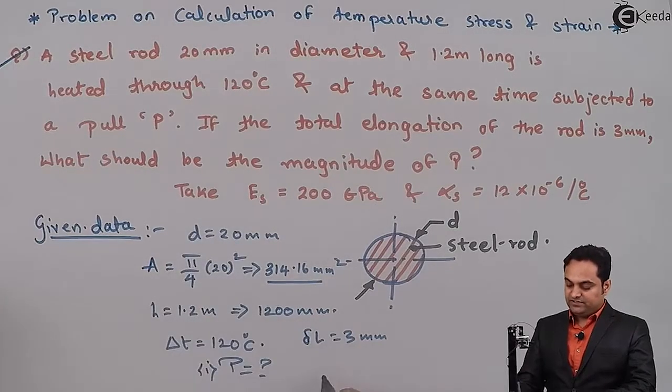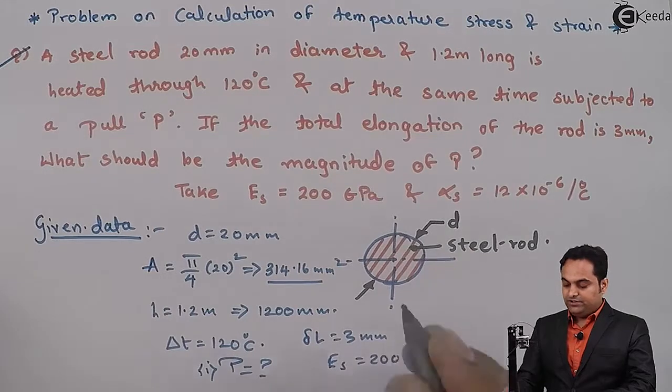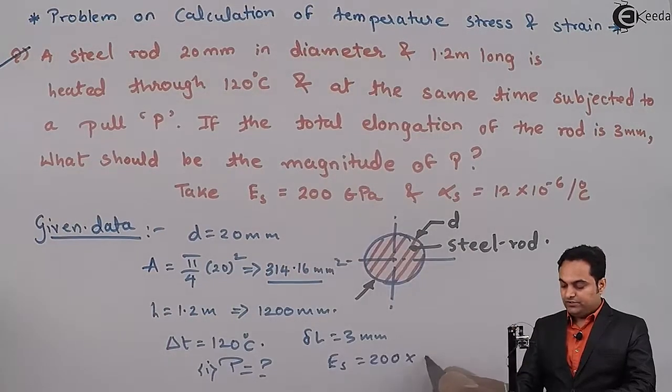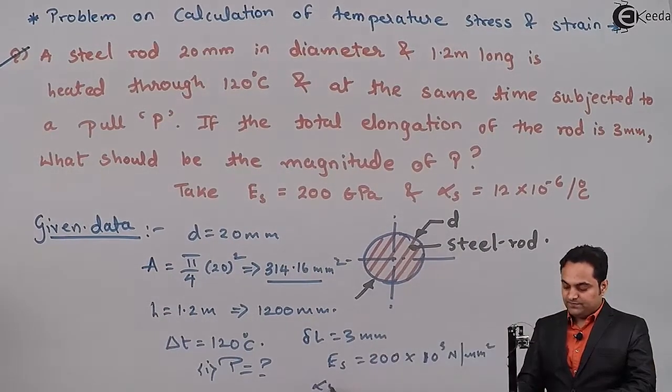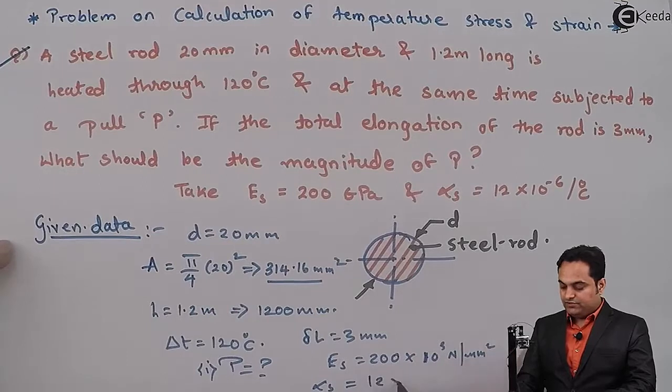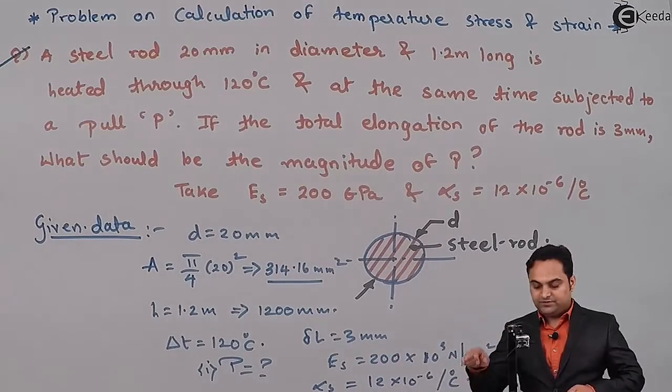Take capital E subscript s, that is Young's modulus for steel, 200 GPa so it is 200 into 10 raised to 3 N per mm square. And alpha subscript s, that is the coefficient of thermal expansion or contraction, 12 into 10 raised to minus 6 per degree Celsius.